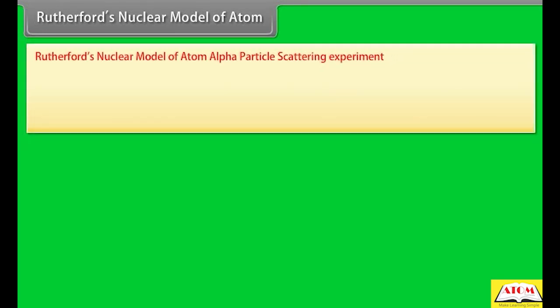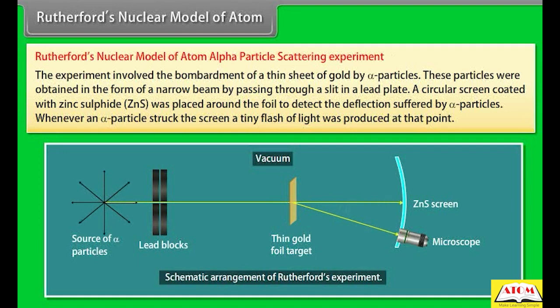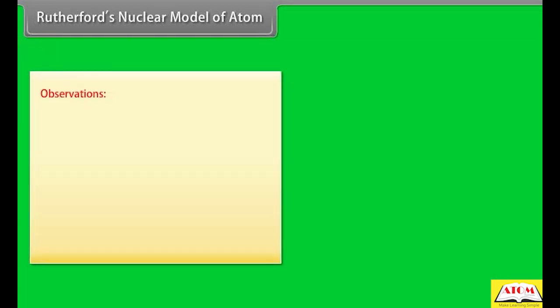Rutherford's nuclear model of atom: Alpha particle scattering experiment. The experiment involved the bombardment of a thin sheet of gold by alpha particles. These particles were obtained in the form of a narrow beam by passing through a slit in a lead plate. A circular screen coated with zinc sulphide (ZnS) was placed around the foil to detect the deflection of alpha particles. Whenever an alpha particle struck the screen, a tiny flash of light was produced at that point.